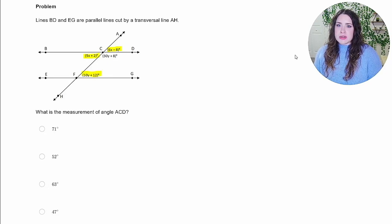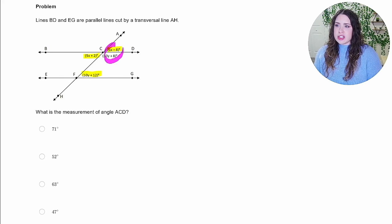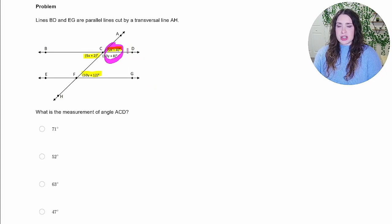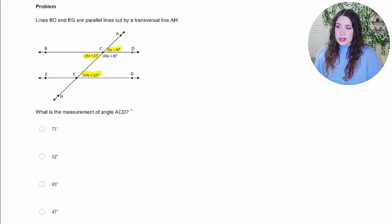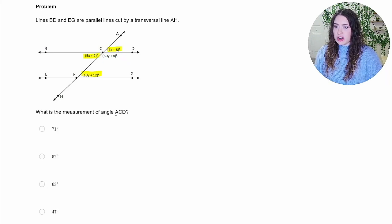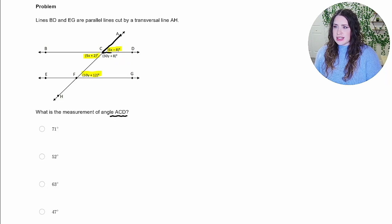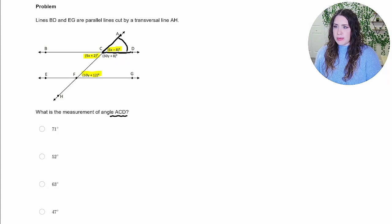If I wanted to use angles such as these two here, those are what we call supplementary, which mean they add to 180 degrees. So depending on what the particular problem looks like, that's some helpful information for these kinds of problems. So this particular problem wants us to find the measure of angle ACD, which if we trace that, that's ACD, which is this angle measure right here.